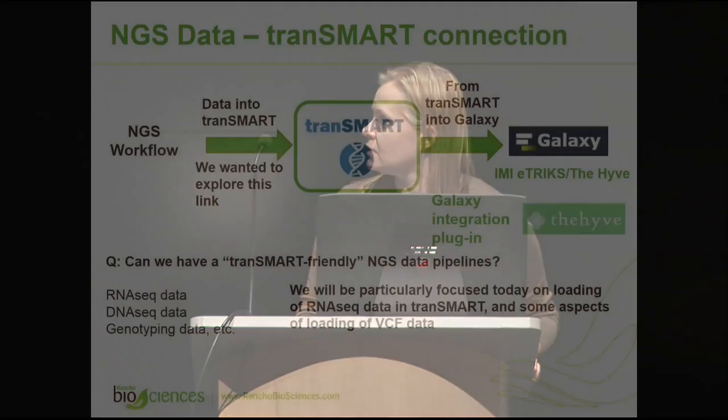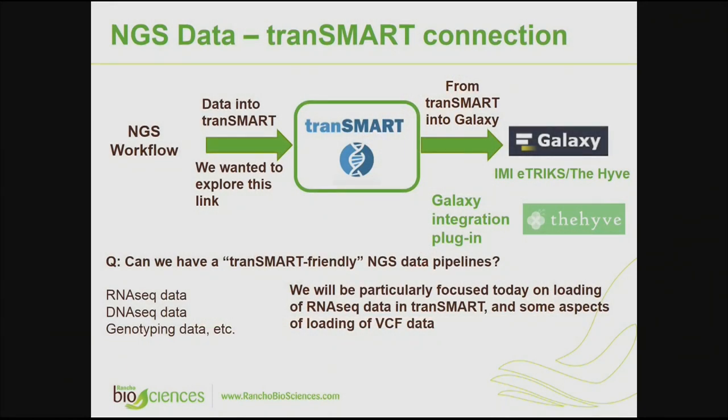On this scheme, as you already know, the Transmart community has already introduced a Galaxy integration plugin. You can extract data from Transmart and transfer it to Galaxy and analyze data there. Our concern was: what about the other side of the scheme? How do you get NGS data into Transmart? We just wanted to explore this link — can we have a Transmart-friendly NGS data pipeline?